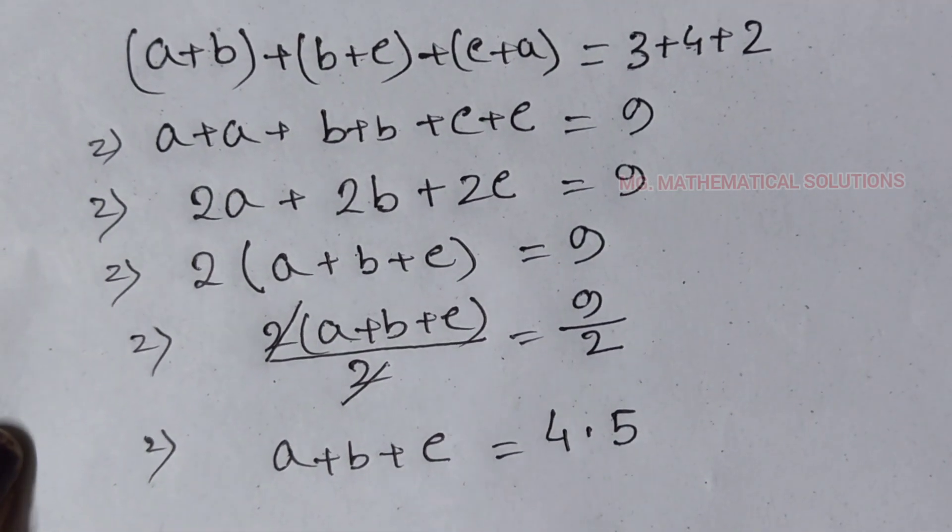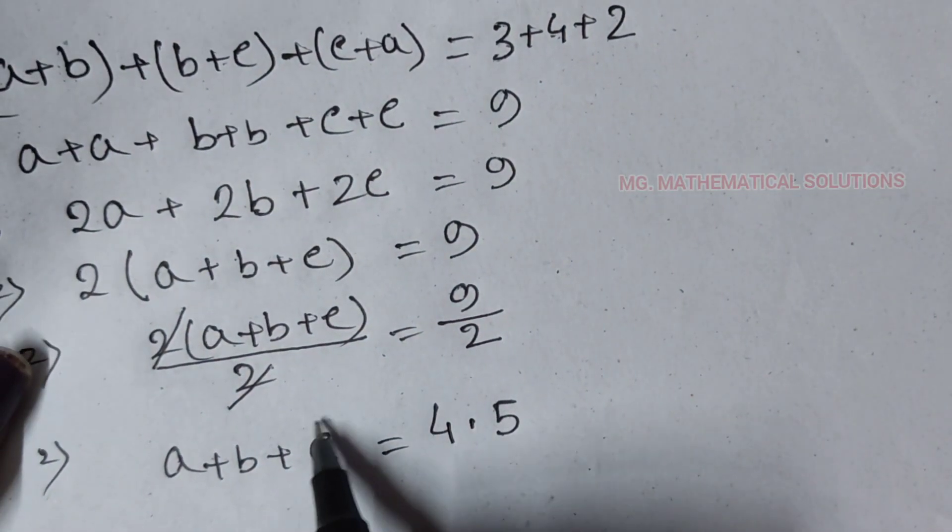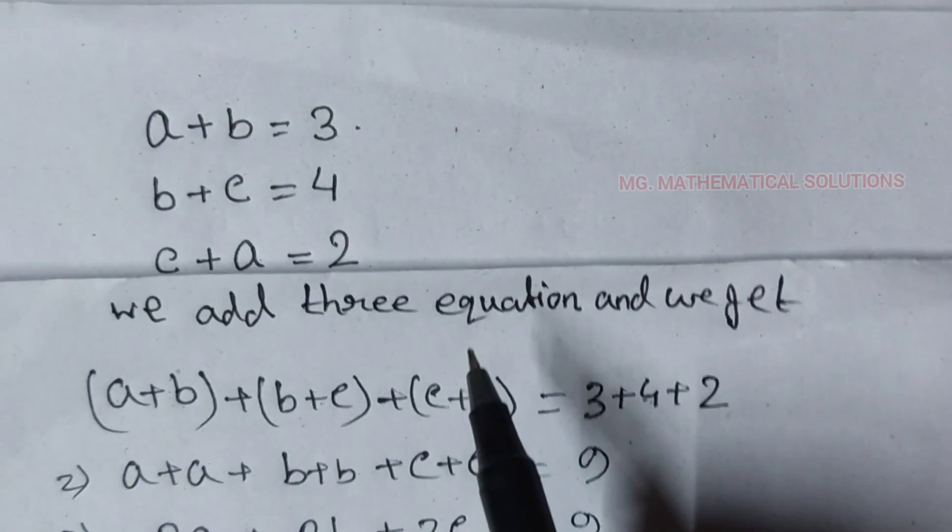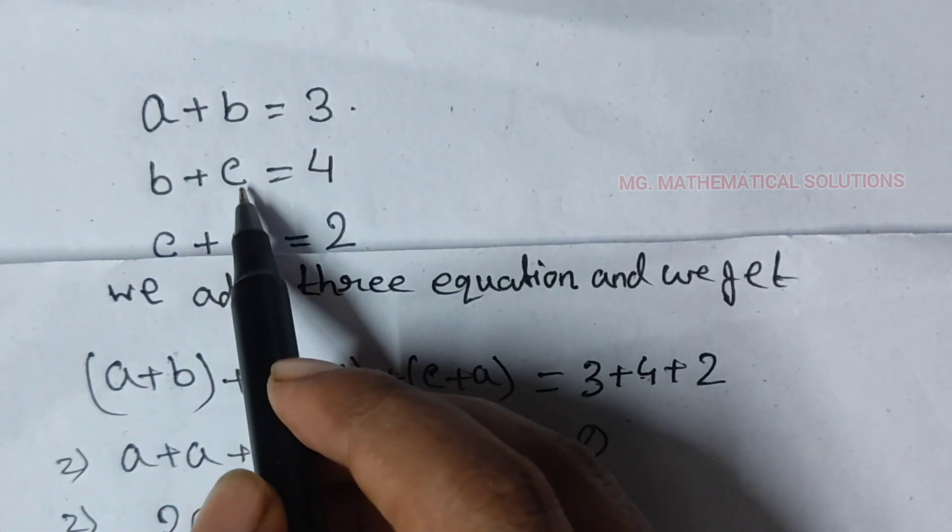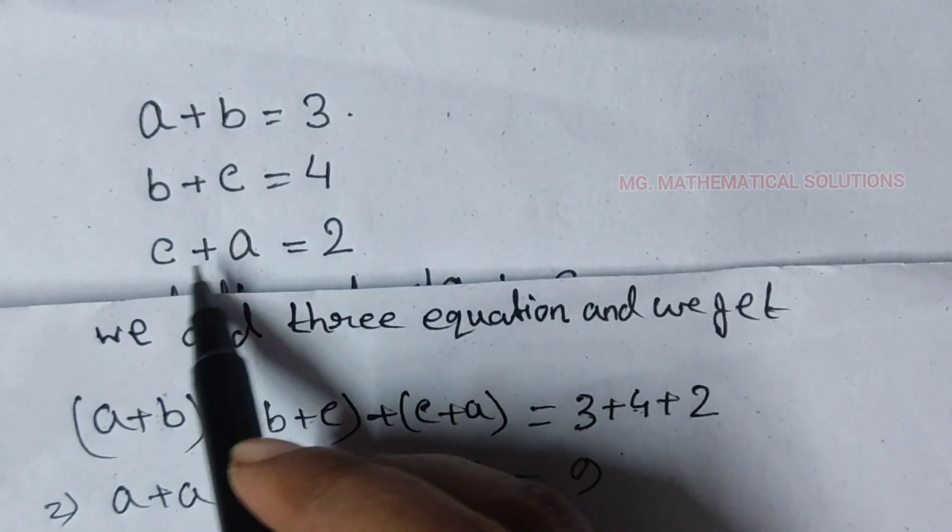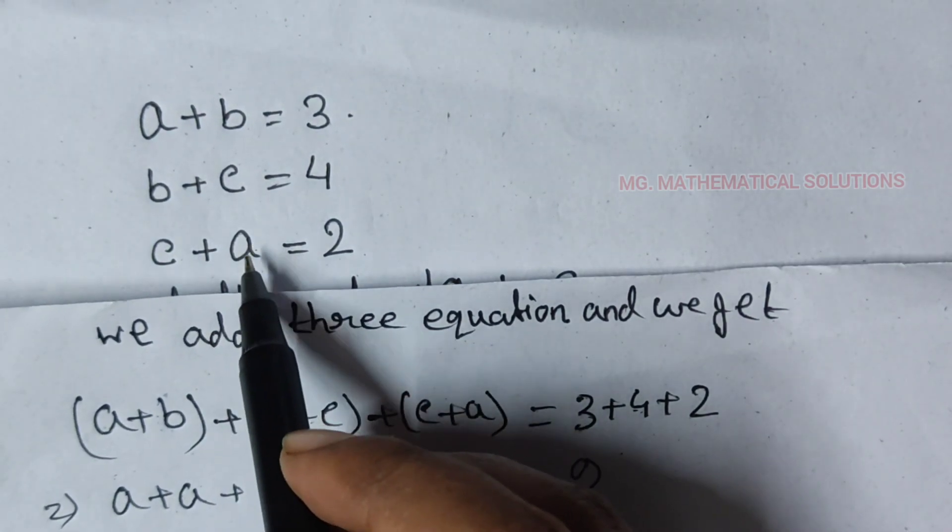A plus b plus c equal to 9 by 2, which is 4.5. Now, if we subtract a plus b from this equation, we get c. If we subtract the second equation, we get a. And if we subtract the third equation, we get b.